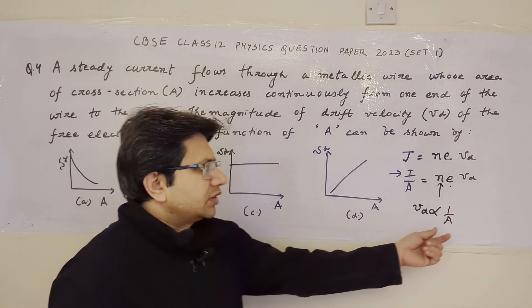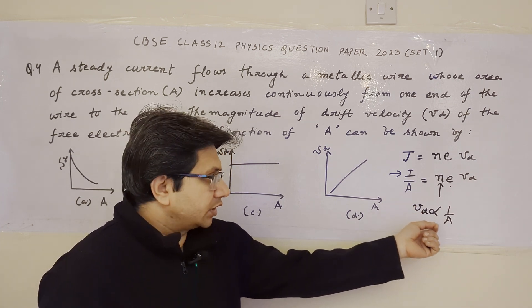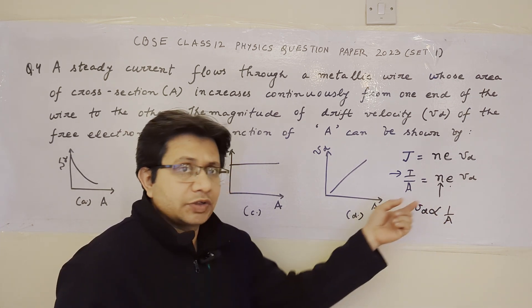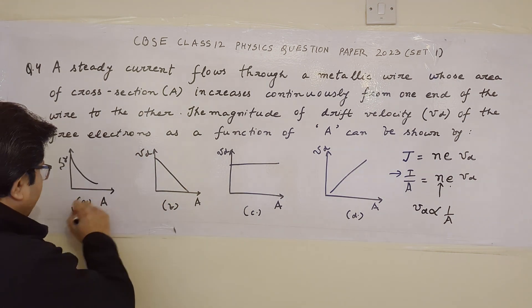In this way, we can say that when the area of cross-section is small, the drift velocity is large, and when the area of cross-section is large, the drift velocity is small. So this particular graph corresponds to graph A.